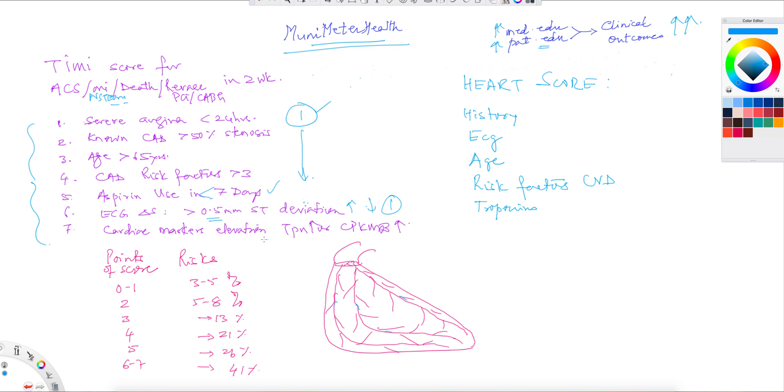And then the cardiac markers, lastly, whether that's troponin you're doing or CPK MB, anything more than the normal range is considered as elevation and automatically you get a score of one.